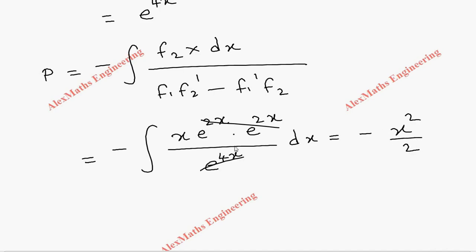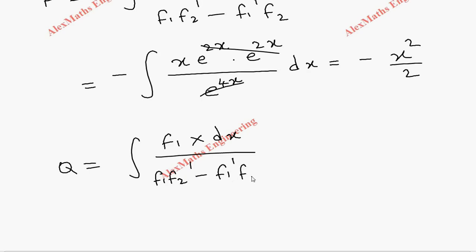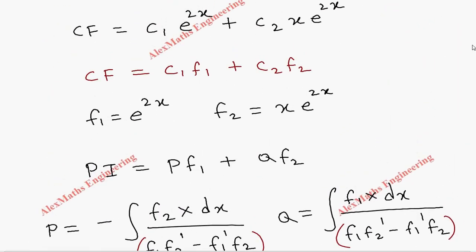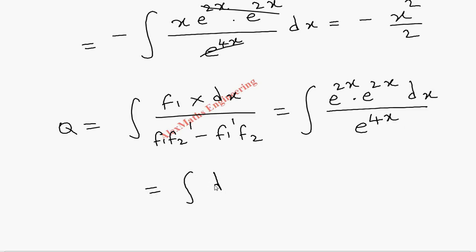The integral of x is x squared over 2, and with the minus sign outside, p equals minus x squared over 2. For q, we integrate f1 times X dx divided by the denominator: e^(2x) times e^(2x) over e^(4x) dx. Everything cancels and we are left with the integral of dx, so q equals x.